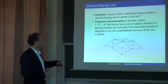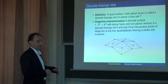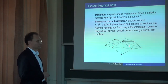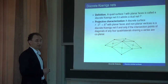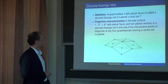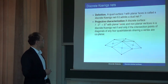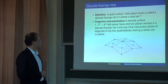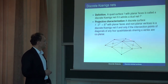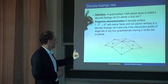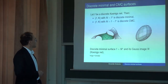Now let us pass to a surface. We would like all quadrilaterals to be dualizable, and there is a closeness condition: if you dualize all these quadrilaterals you come back consistently. Such dualizable quad surfaces are called Koenigs nets, if they admit a dual net f*. There is a projective characterization: a discrete surface with planar faces is a discrete Koenigs net if and only if the intersection points of diagonals of any four quadrilaterals sharing a vertex are coplanar.